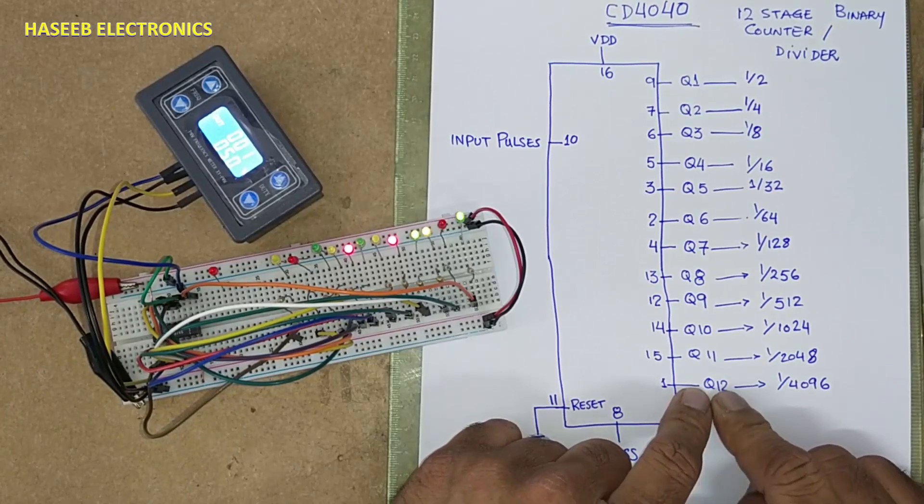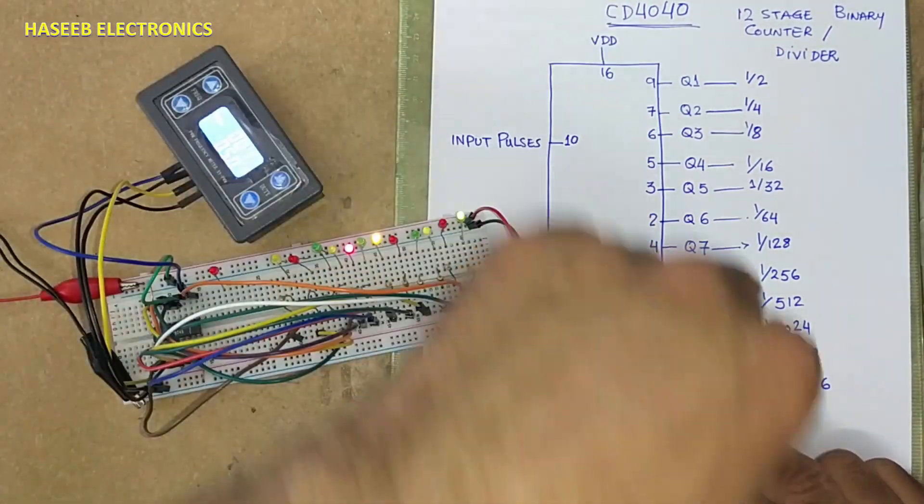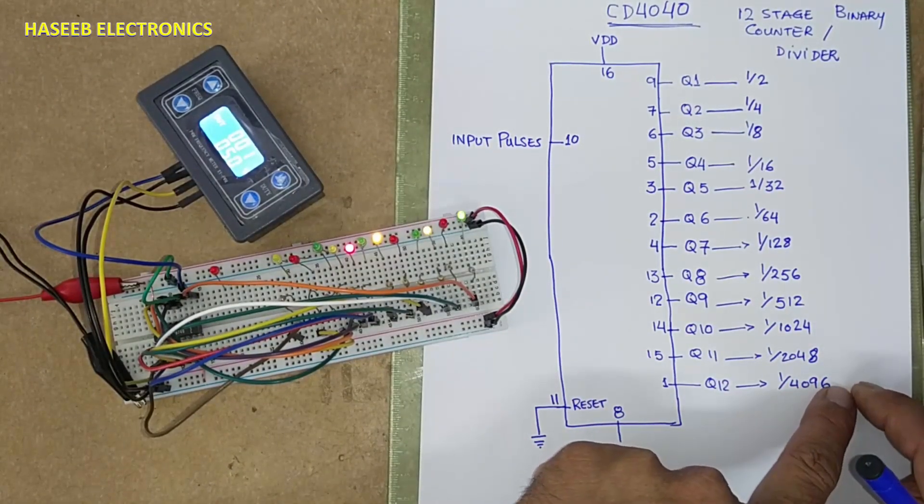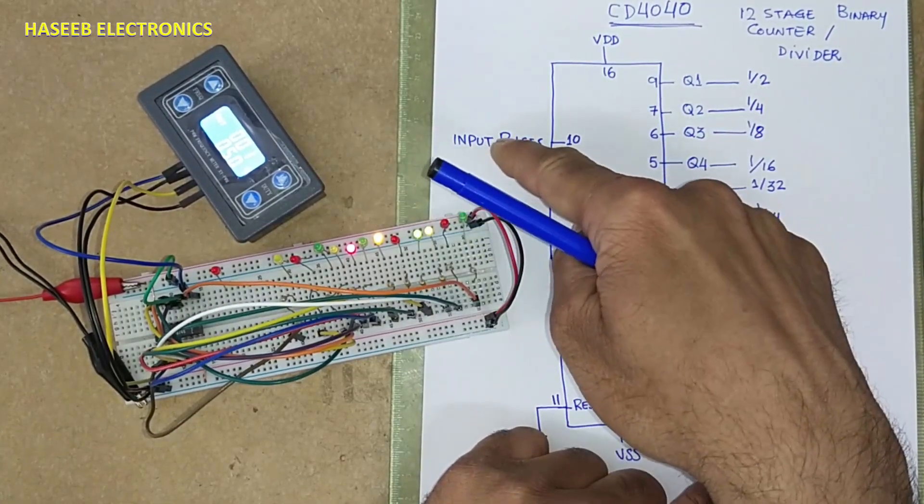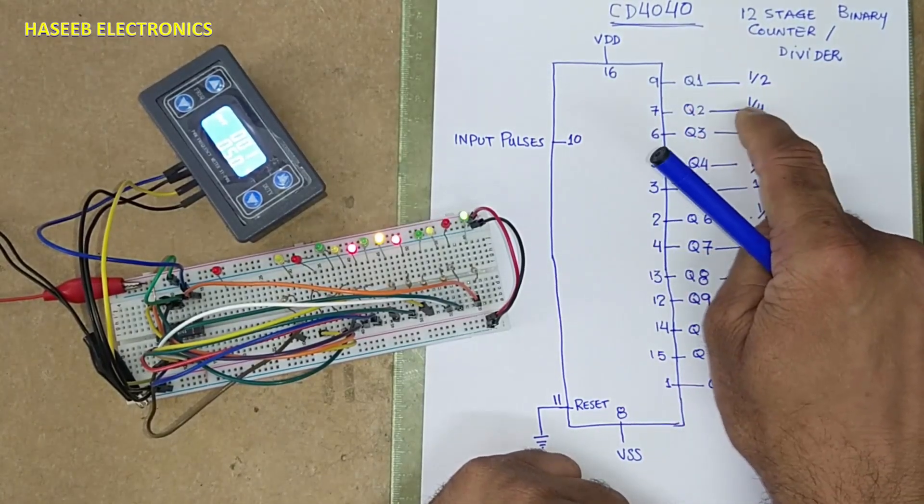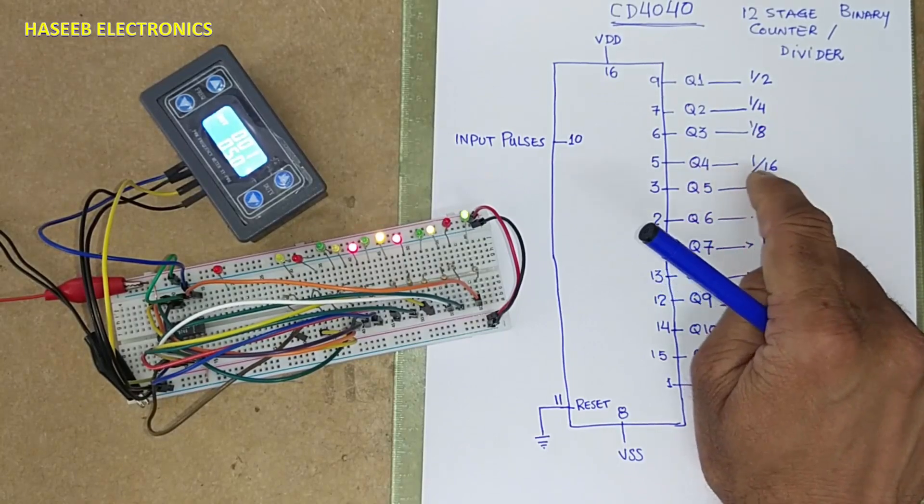If we take output from this point, input frequency here will be divided by 4096 and we will receive the resultant output here. 1 over 2 divided by 2. Input frequency will be divided by 2 here. At this point, 1 over 4. Here 1 over 8. 1 over 16.